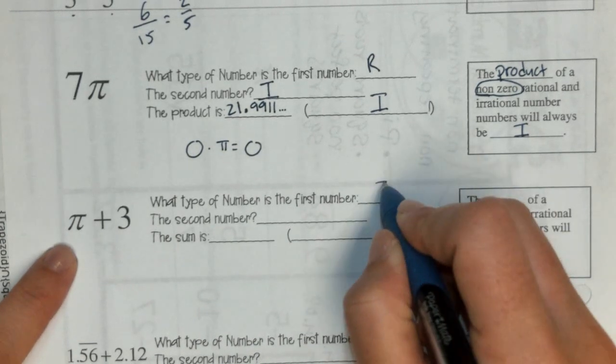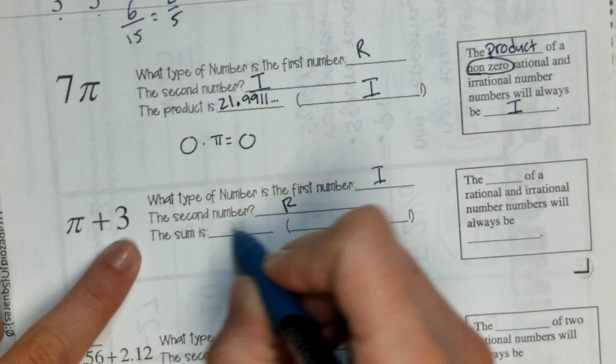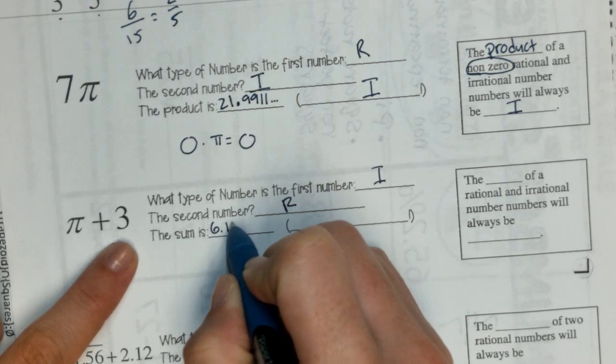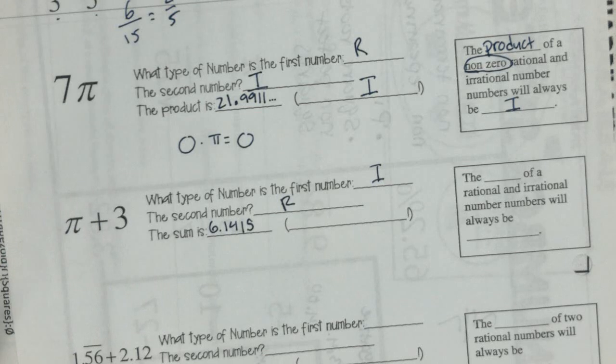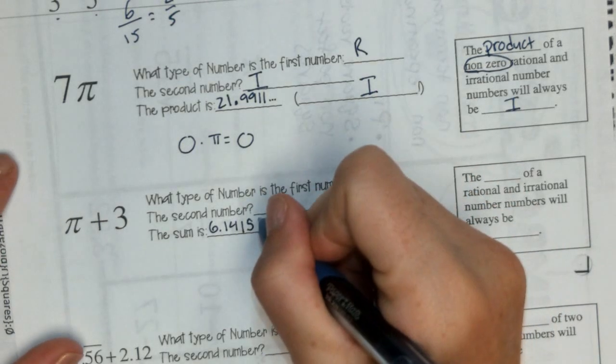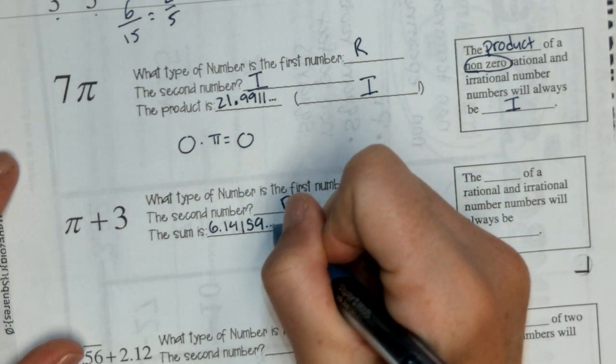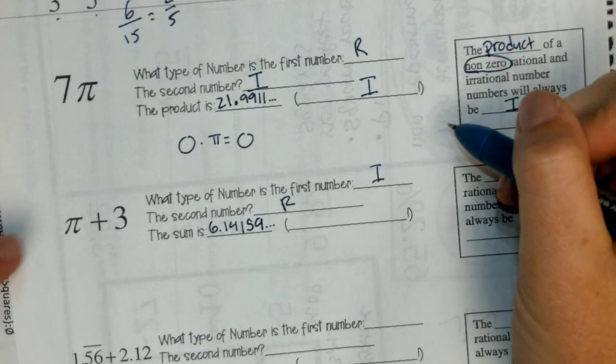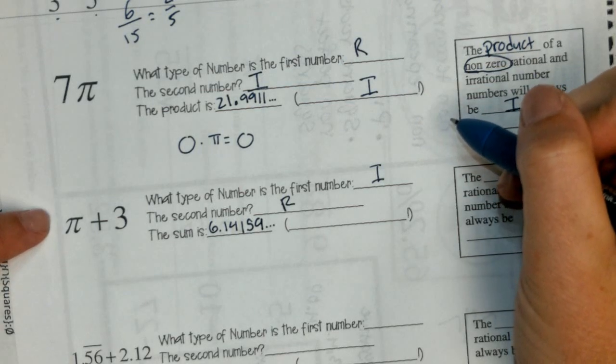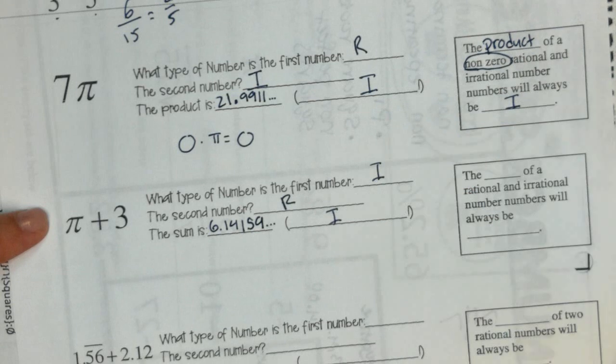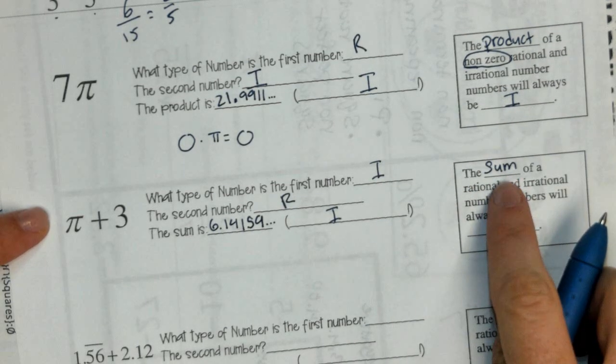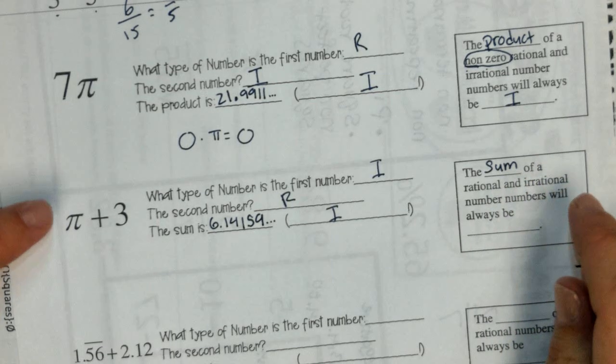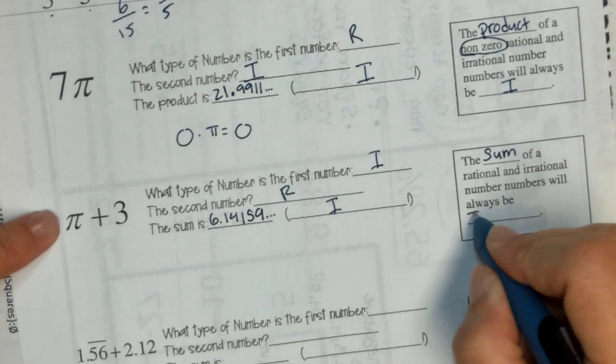Pi is irrational. 3 is rational. The sum is 6.1415926. But anyway, we have pi in here. We're just adding 3 to it. That's still going to be irrational. So, the sum, when we add two numbers together, if one of them is irrational, the answer will be irrational.